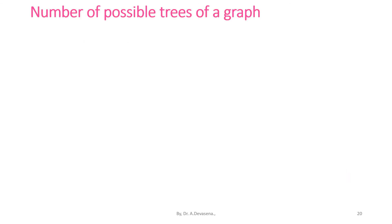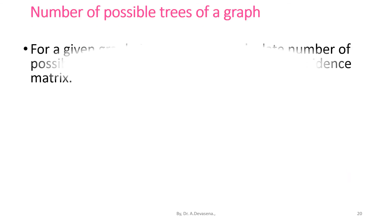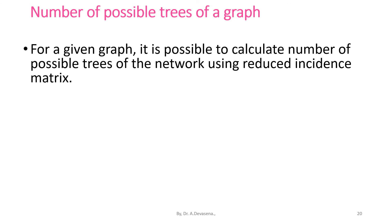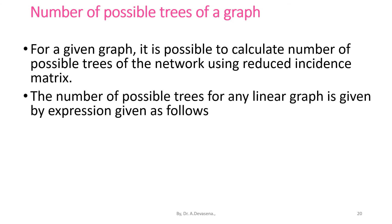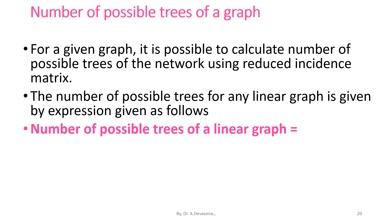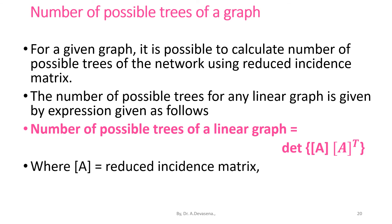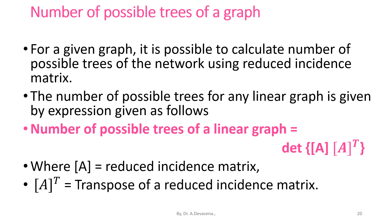For a given graph, it is possible to calculate the number of possible trees of the network using the reduced incidence matrix. The number of possible trees for any linear graph is equal to the determinant of the product of matrix A and its transpose A-transpose, where A is the reduced incidence matrix and A-transpose is the transpose of the reduced incidence matrix.